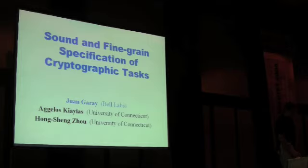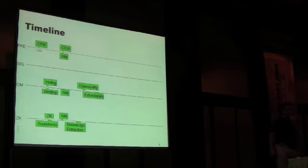Let me start with a timeline of security definitions for some cryptographic tasks, starting with public-key encryption, say around 1984. The notion of CPA came out, and then some other notions for public-key encryption and so forth.